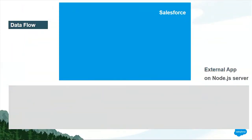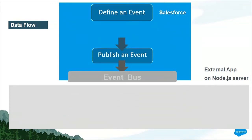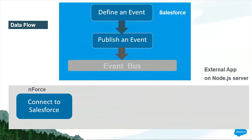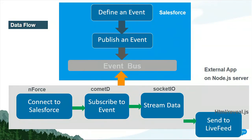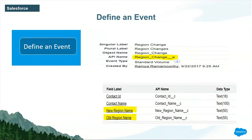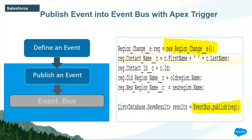At the end of this use case, you should be able to understand how easy it is to define an event and publish it into the event bus inside Salesforce. For our demo purposes, we are going to use a Node.js app. You should be able to understand how to connect to Salesforce, subscribe to that event, stream the data, and send it to the live feed. Defining an event — as I said, you can do it like an SObject. Note how the API name ends in underscore E. You can create your own fields; in my case, I'm interested in just a contact name, the old region, and the new region change. Then I create an instance of that event and use EventBus.publish() to publish onto the event bus inside Salesforce. It's quite easy.